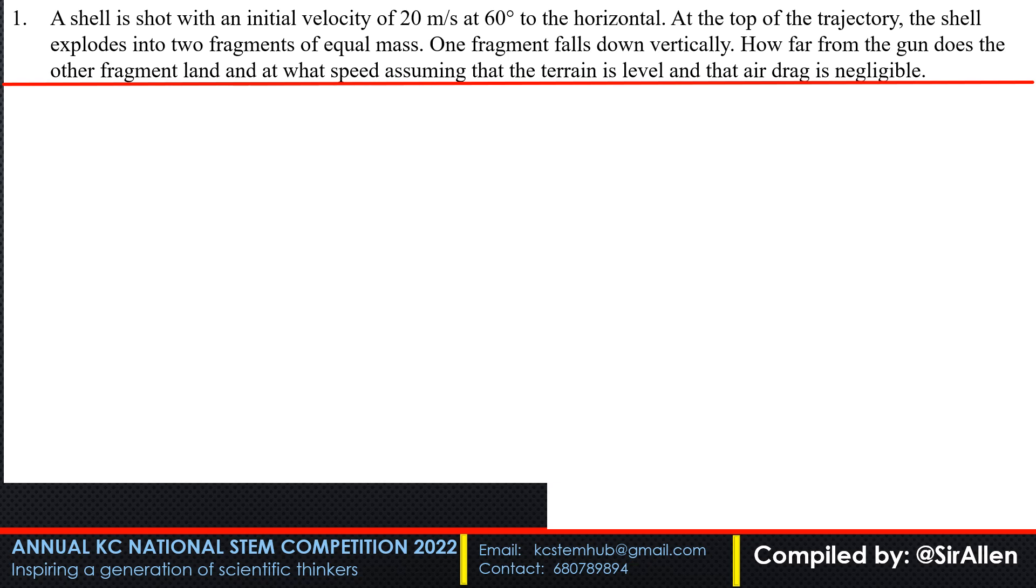The question reads: A shell is shot with an initial velocity of 20 meters per second at 60 degrees to the horizontal. At the top of the trajectory, the shell explodes into two fragments of equal mass. One fragment falls down vertically. How far from the gun does the other fragment land and at what speed, assuming that the terrain is level and air drag is negligible?